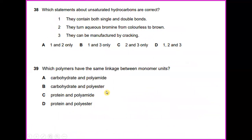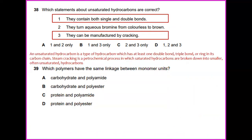38. Which statements about unsaturated hydrocarbons are correct? Let's look into the explanation. An unsaturated hydrocarbon is a type of hydrocarbon which has at least one double bond, triple bond, or ring in its carbon chain. So it meets the answer for number 1. And steam cracking is a petrochemical process in which saturated hydrocarbons are broken down into smaller, often unsaturated hydrocarbons. So it meets the answer for number 3. They can be manufactured by cracking. So the answer would be 1 and 3.